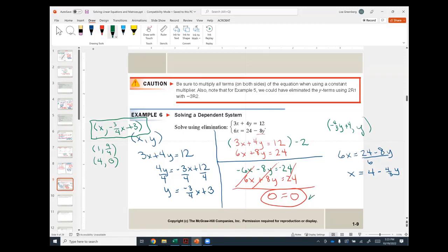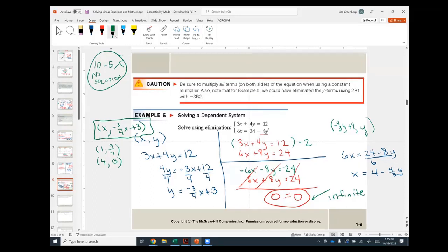Here I have 0 equals 0, which is always true, which is why I have infinite solutions. If I ended up at the end with 10 equals 5, well, that never is true. That would be no solution. That would be two parallel lines like we talked about. And we would just write no solution because there is no solution.